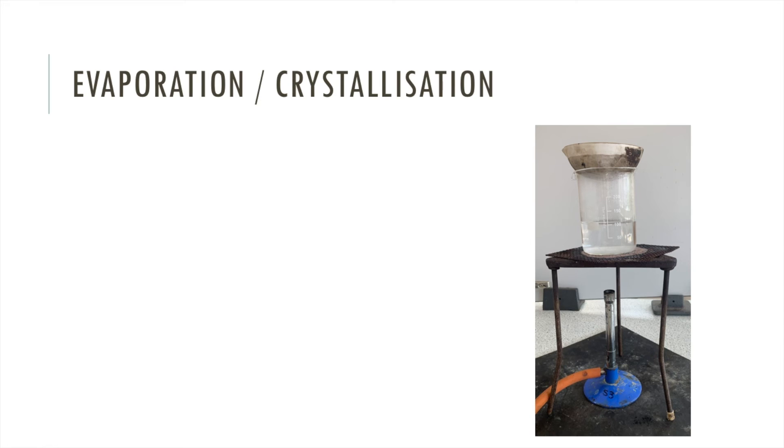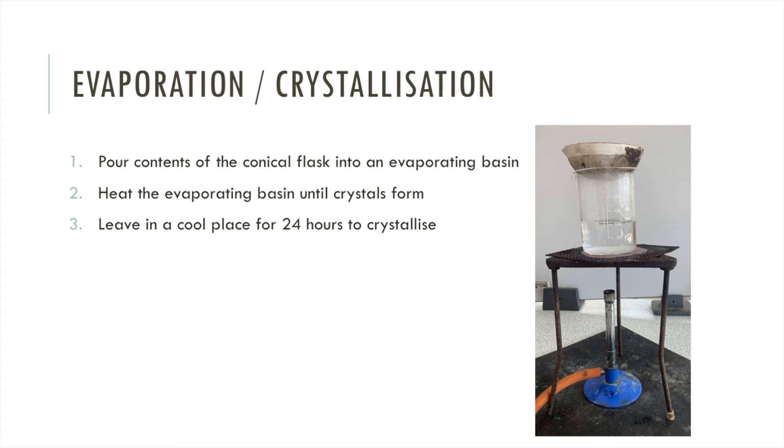So this is the apparatus in what it looks like in real life. The steps here are you pour the contents of your conical flask into this evaporating basin. You heat it until crystals form, and the method of heating is this water bath. So you've got a beaker half filled with water and it's heated with the Bunsen burner. Once those crystals begin to form, you take it off the heat and you leave it in a cool place, for example a windowsill, and you leave it for about a day or so to crystallize.